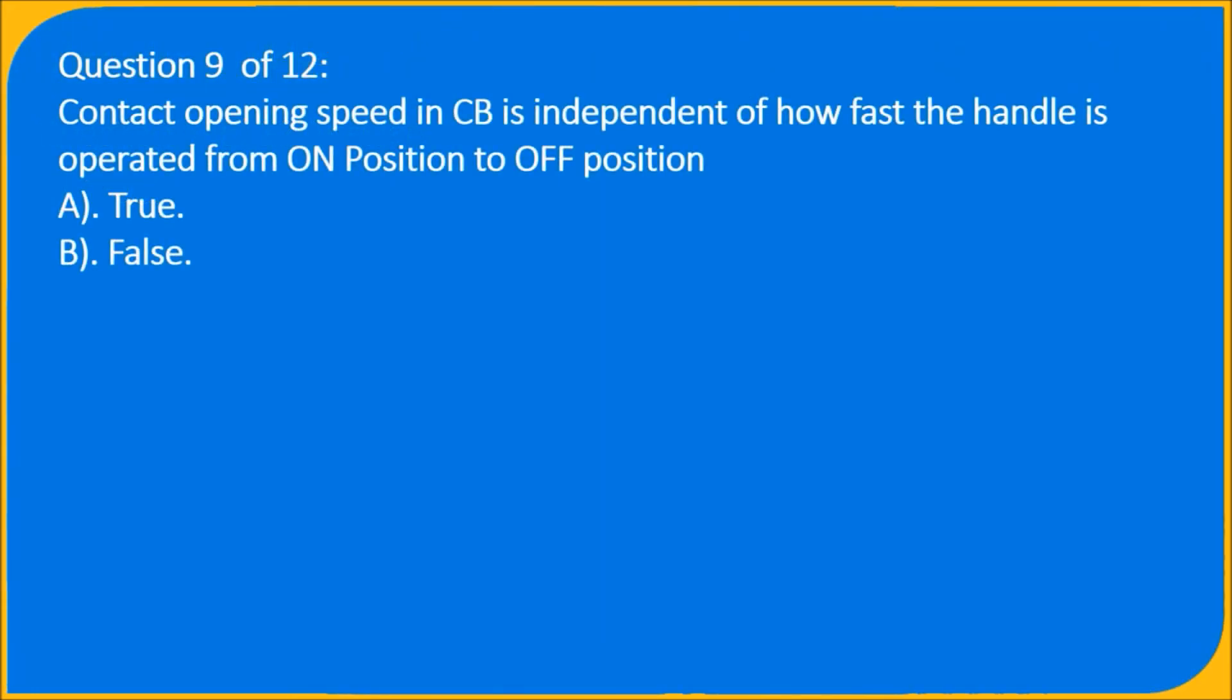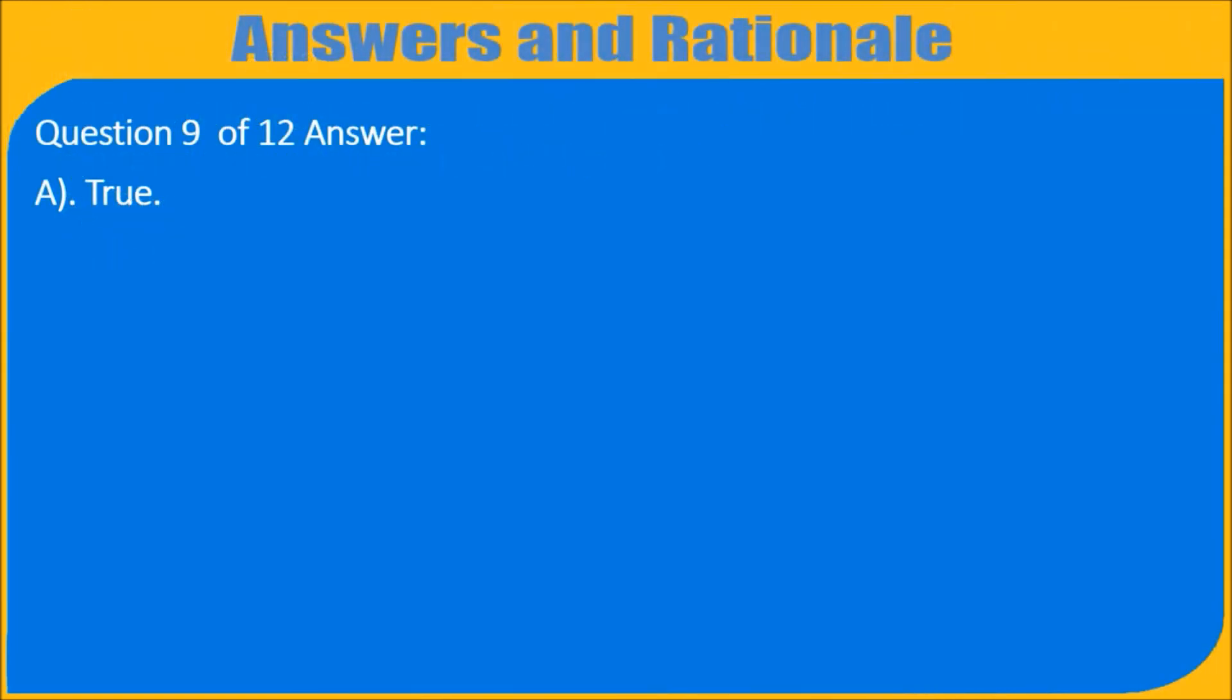Question 9 of 12: Contact opening speed in CB is independent of how fast the handle is operated from ON position to OFF position. A) True, B) False. Question 9 of 12 answer: A) True.